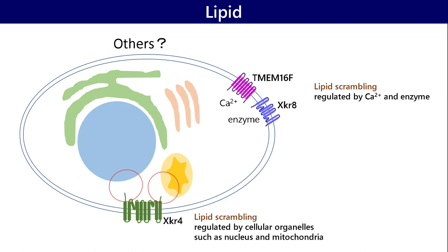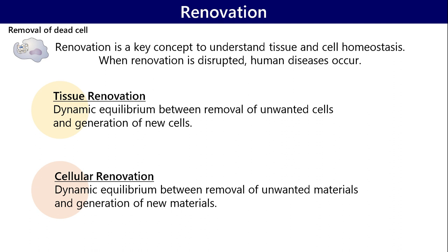Currently, we are working to understand how these scrambling proteins regulate lipid scrambling by various approaches. Starting from research on removal of dead cells, we are now interested in renovation. Renovation is a key concept to understand tissue and cell homeostasis, and when renovation is disrupted, human diseases occur.